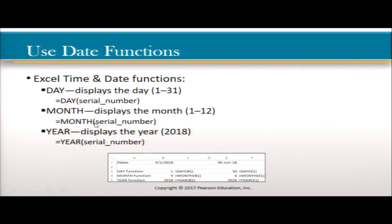The MONTH function works the same way — MONTH with the serial number as the argument. For example, equals MONTH and B1, where B1 is September 1st, 2018, so the result was 9. Same thing with YEAR — it looks at the date in B1 and returns the year as the result.